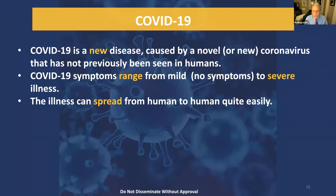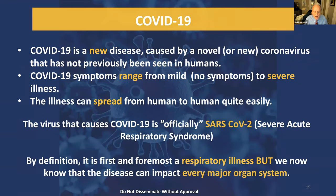Let's talk about COVID-19. It is a new disease caused by the coronavirus, but the coronavirus has been around for many, many years — in fact, the common cold is a coronavirus. What makes COVID-19 so mysterious is that symptoms range from mild or literally no symptoms — asymptomatic — to severe illness. The virus officially is called SARS-CoV-2, which stands for severe acute respiratory syndrome, meaning by definition it is a respiratory illness. But we now know this disease can impact every single major organ system within your body, which is why fatalities are so high.